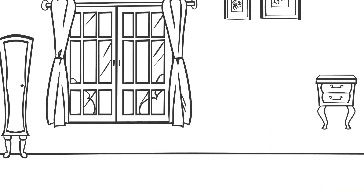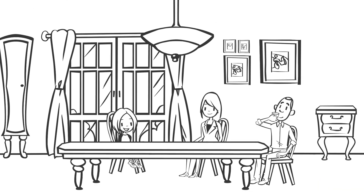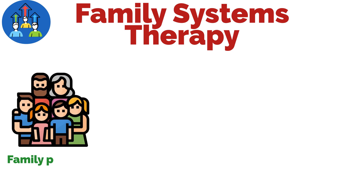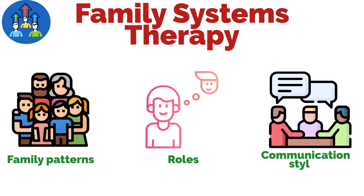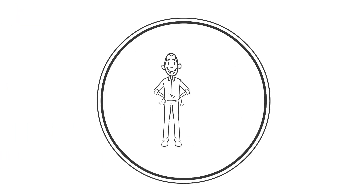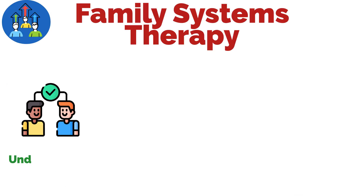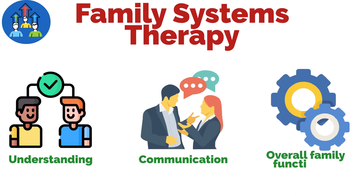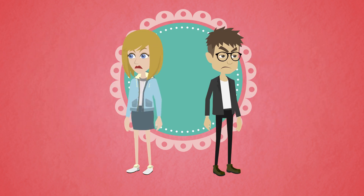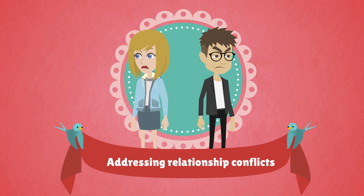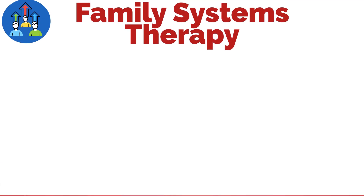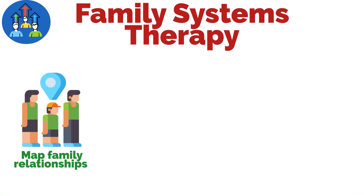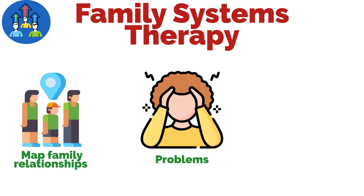Family systems therapy views psychological issues within the context of family relationships and dynamics. This approach considers how family patterns, roles, and communication styles contribute to individual problems. Therapists work with multiple family members to improve understanding, communication, and overall family functioning. It is particularly useful for addressing relationship conflicts and family-wide issues.